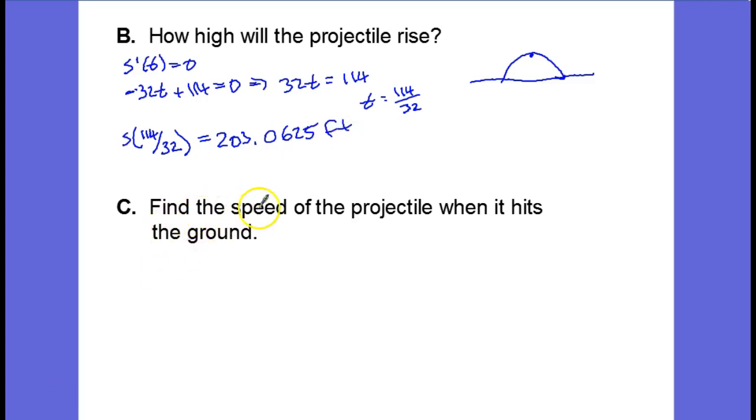In part C, we're asked to find the speed of the projectile when it hits the ground. When it hits the ground, that means that our s(t) function will have a value of zero.